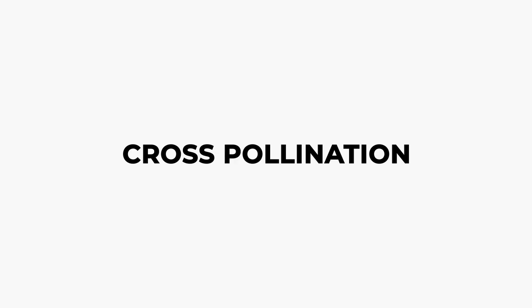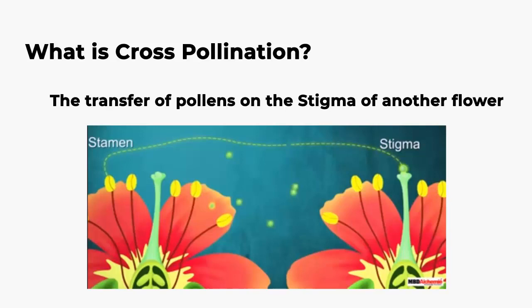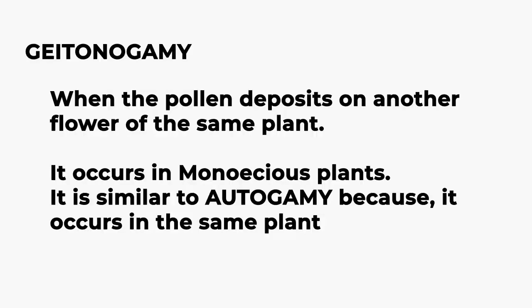Now let us learn about cross-pollination. What is cross-pollination? The transfer of pollen onto the stigma of another flower. Cross-pollination is of two types: the first one is geitonogamy and the next one is xenogamy.